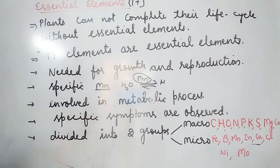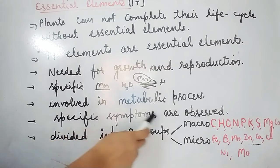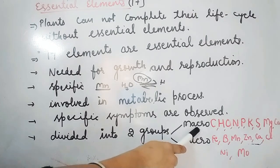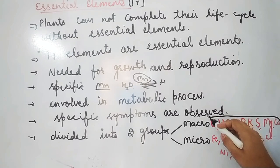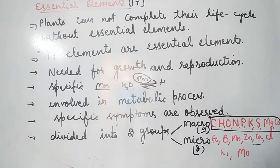If there is a deficiency of an essential element, specific symptoms are observed. Essential elements are divided into two groups: Macro Essential Elements, which are required in comparatively large amounts — there are 9 of these — and Micro Essential Elements, of which there are 8.